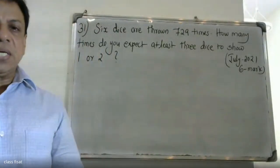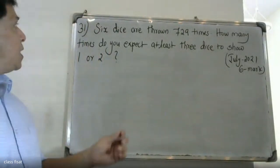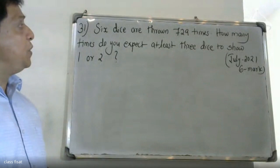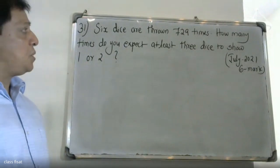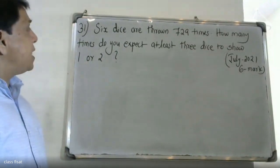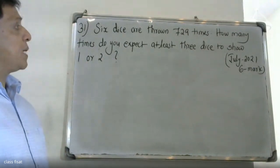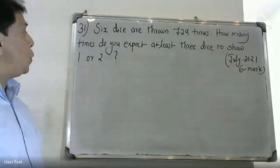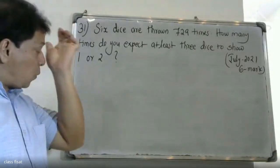Good morning, students. At the university question: six dice are rolled 729 times. How many times do we expect at least three dice to show one or two?